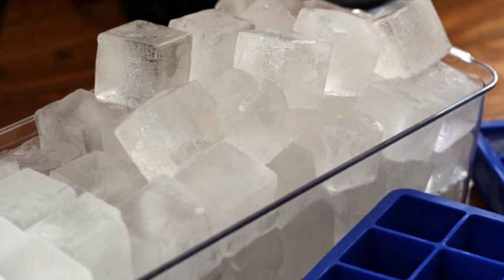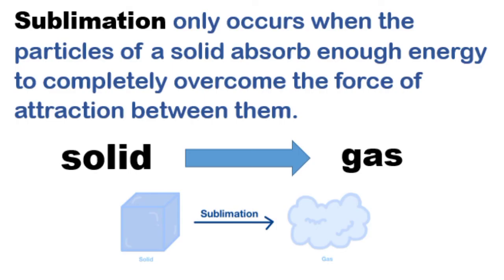For example, when an ice cube melts, it takes on a new shape as it absorbs the ability to flow, but its composition remains unchanged. When we put the melted ice cube back in the fridge, it returns to a solid state because of the temperature — again, the composition remains the same.